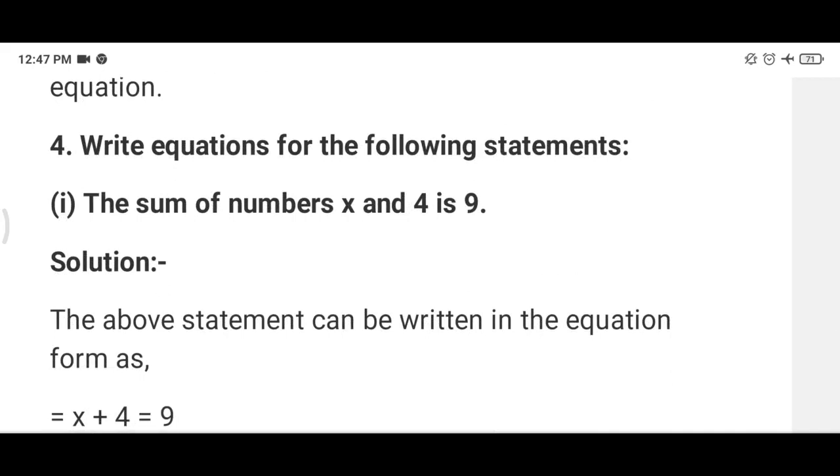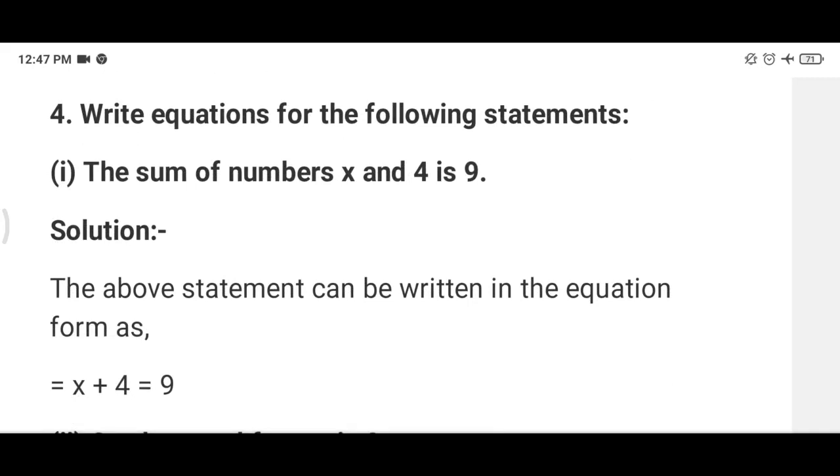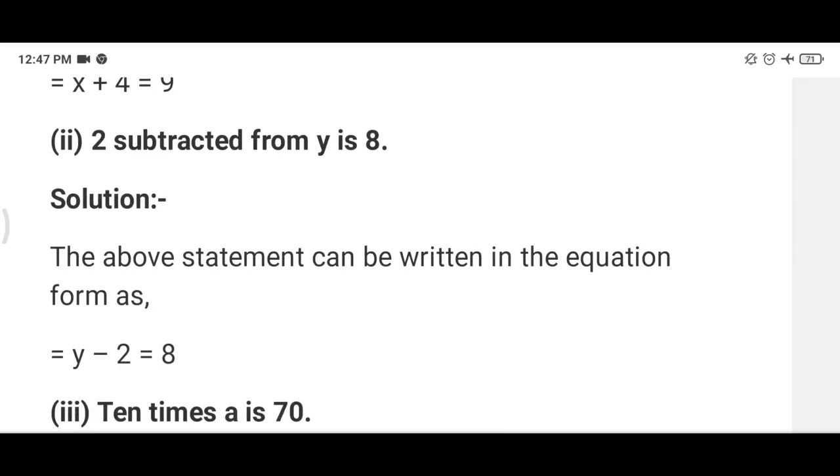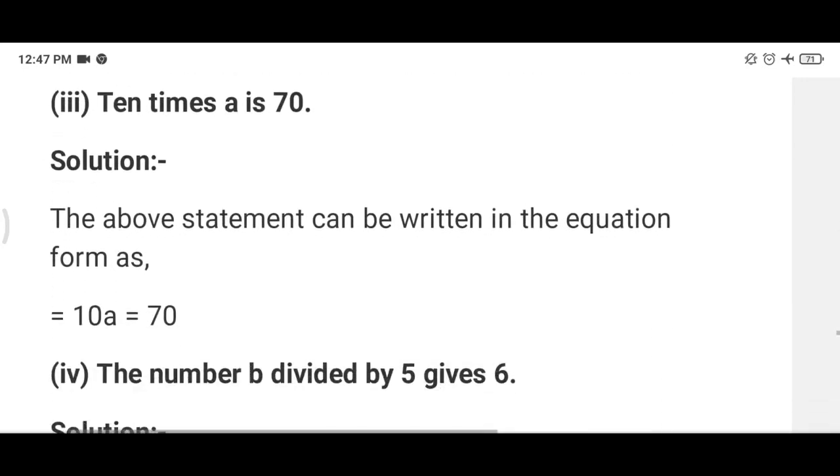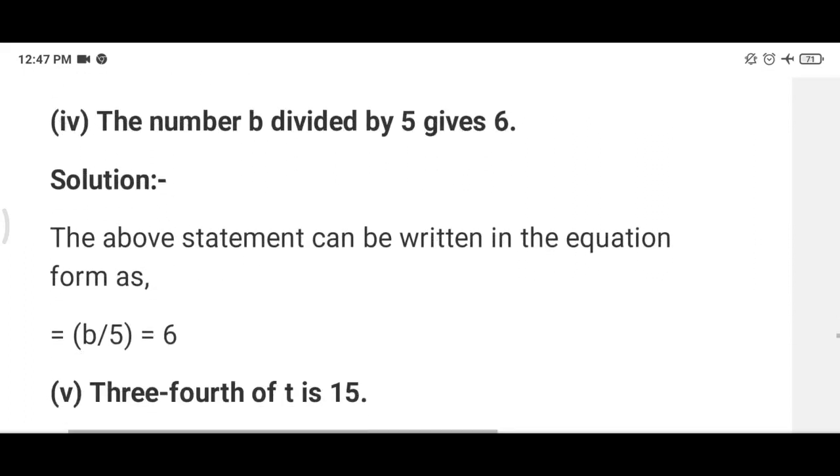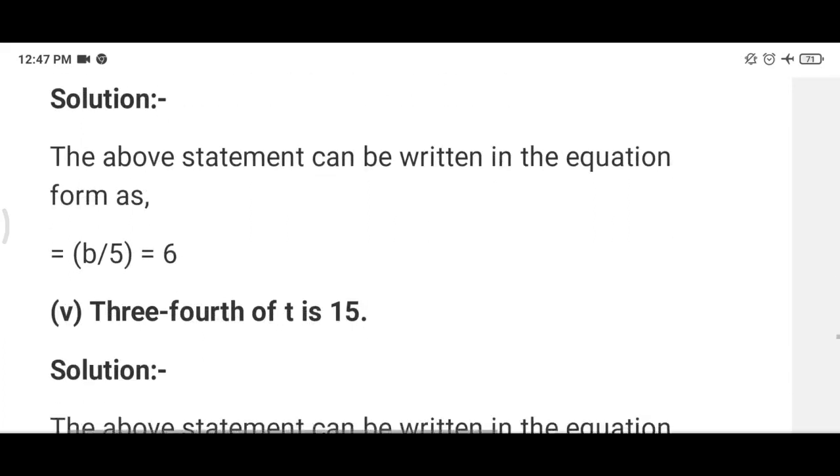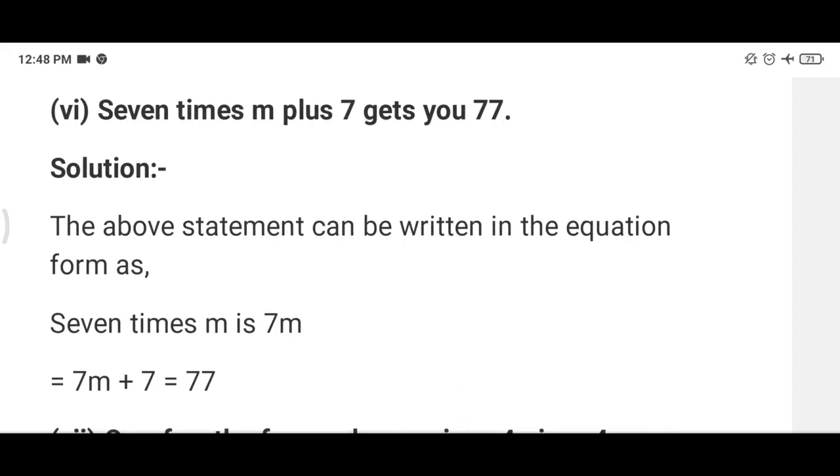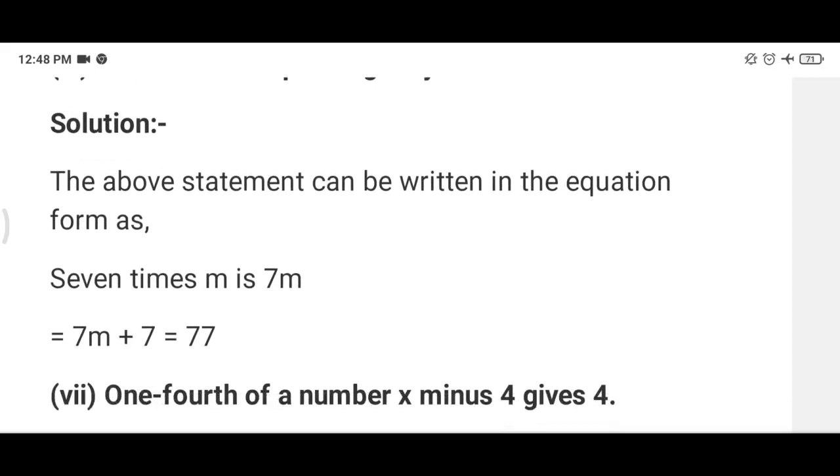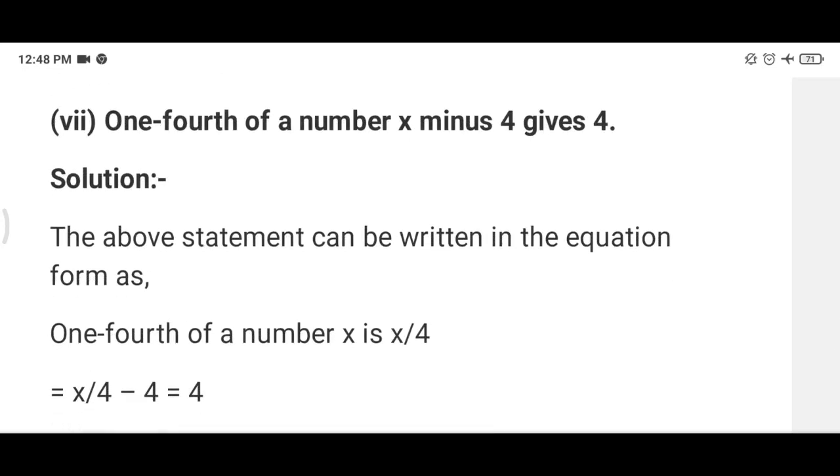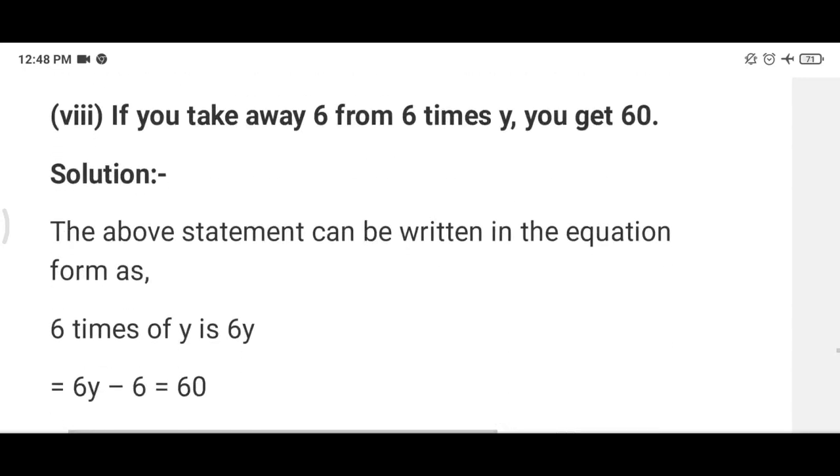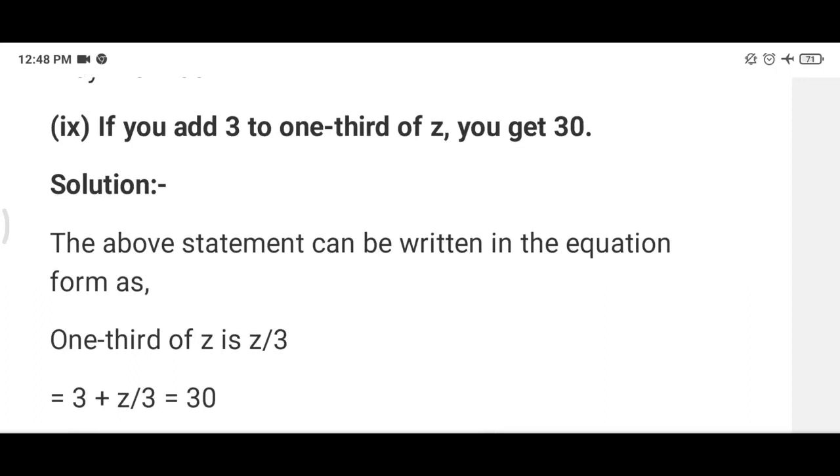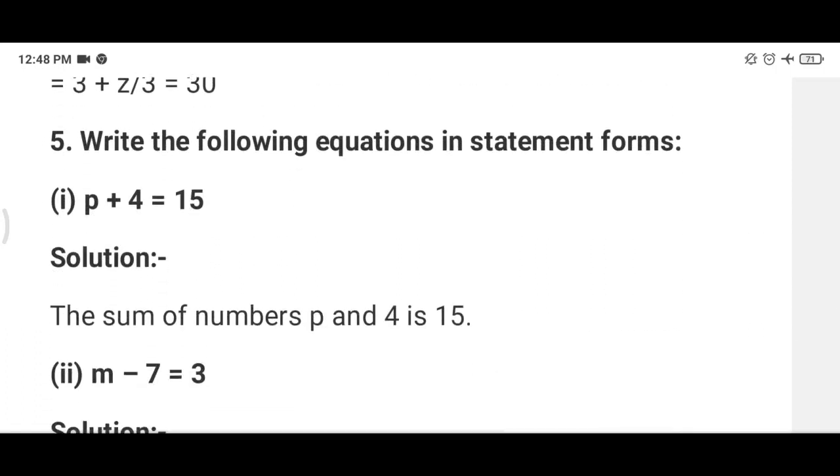Now write equation for the following statements. The sum of number x and 4 is 9, so x plus 4 equals 9. 2 subtracted from y is 8, so y minus 2 equals 8. 10 times a is 70, so 10a equals 70. The number b divided by 5 gives 6, so b upon 5 equals 6. 3 fourth of t is 15, so 3t upon 4 equals 15. 7 times m plus 7 gets you 77, so 7m plus 7 equals 77. One fourth of x minus 4 gives 4, so x upon 4 minus 4 equals 4. If you take away 6 from 6 times y you get 60, so 6y minus 6 equals 60. If you add 3 to one third of z you get 30, so 3 plus z upon 3 equals 30.